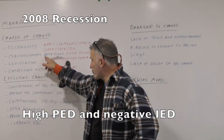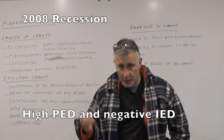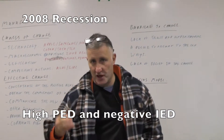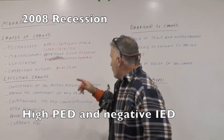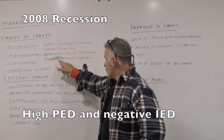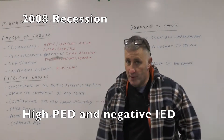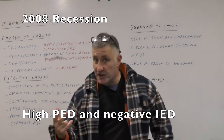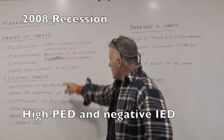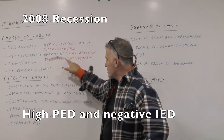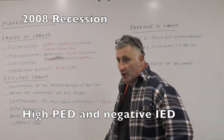We also have macroeconomic conditions as a cause of change. Obviously the big one was in 2008 with the massive recession. Therefore various companies took off, like Primark, Domino's, and Ryanair — primarily because they had a negative income elasticity of demand, or because they were in industries characterised by a high price elasticity of demand.